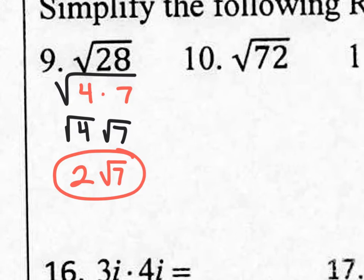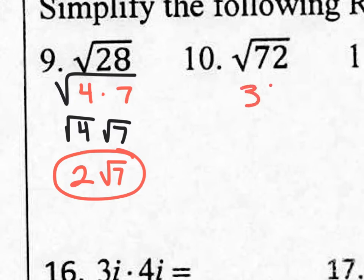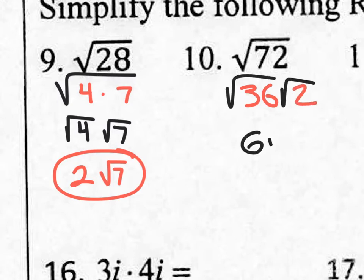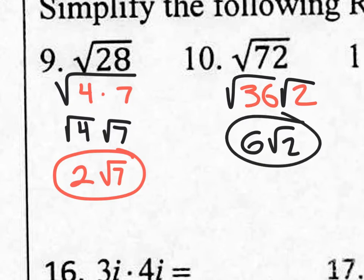Moving on to number 10: 72. Well, 4 does work — 4 times 18 is 72 — and 16 also works. But try to use the highest perfect square number, so don't go with 4 times 18; that's going to take too long. If you think about your perfect square numbers and take a couple of seconds more, the highest perfect square that works is 36 times 2. So if you go 36 times 2 and split the root, you will get 6 square root of 2 as your final answer. Yes, it's that easy.